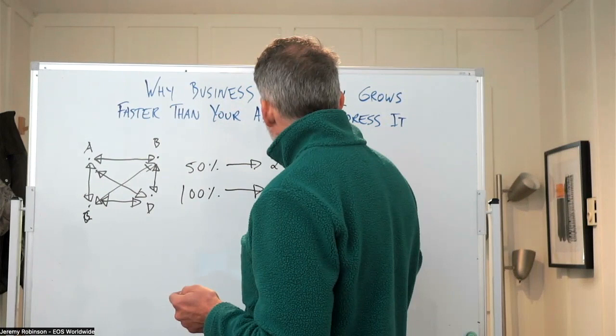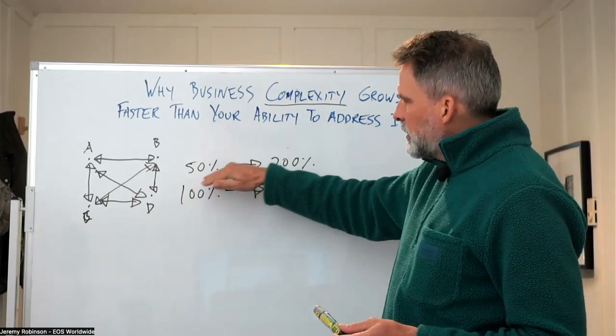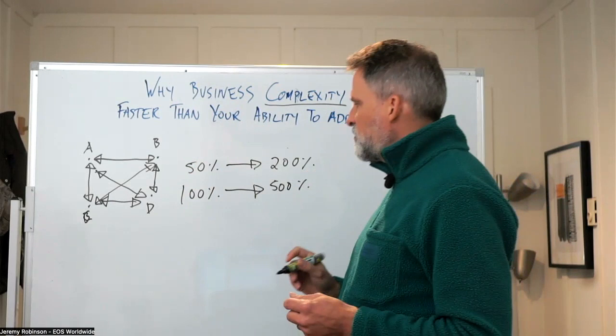So what this model is intended to illustrate is that while your organization grows in a linear fashion, complexity actually grows in an exponential fashion.